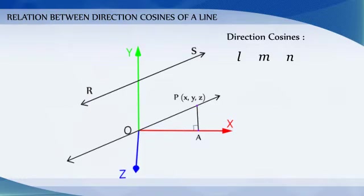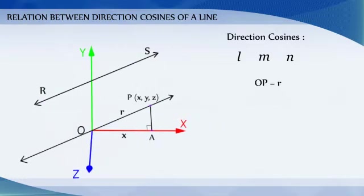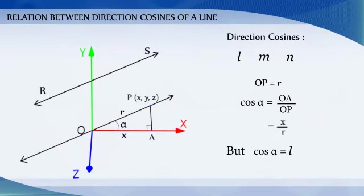Let OP equal R. Then cos alpha equals OA by OP, which is equal to X by R. But cos alpha is equal to L. Therefore, X is equal to LR.